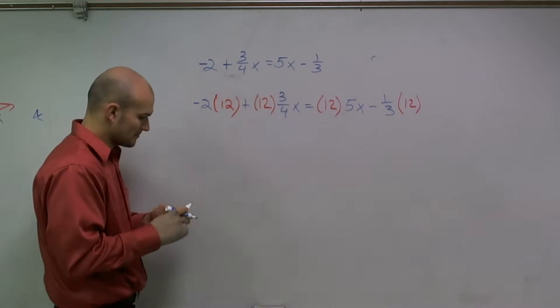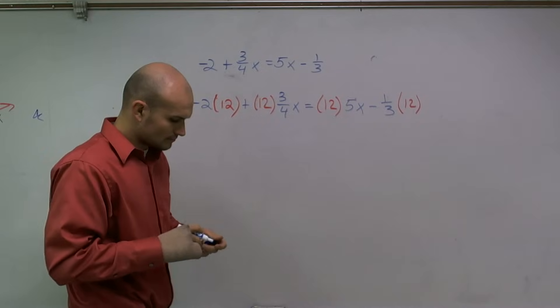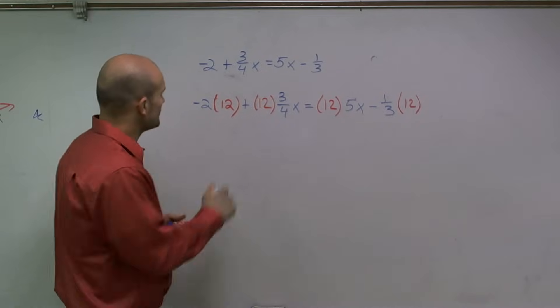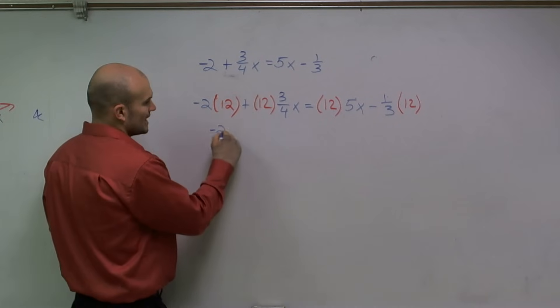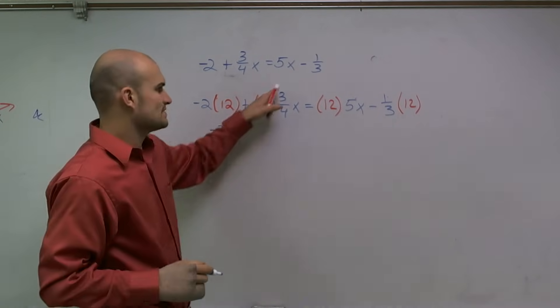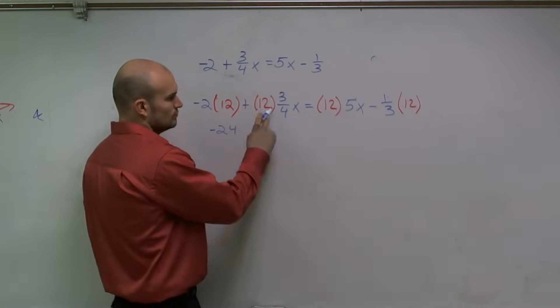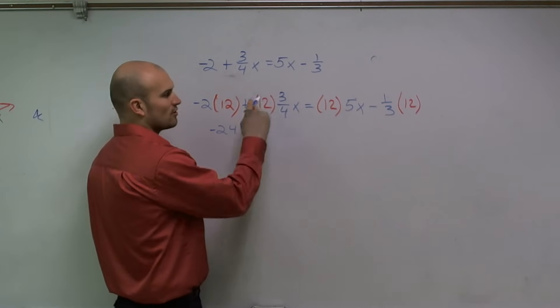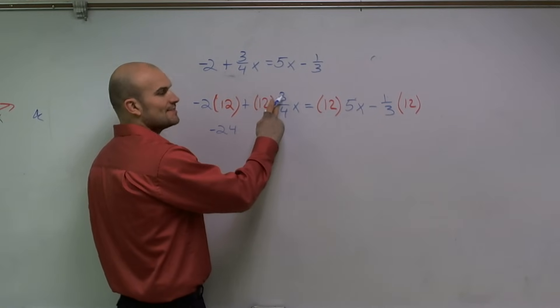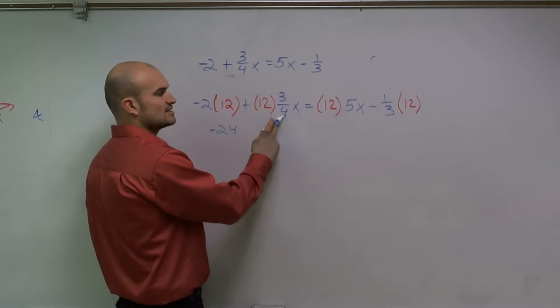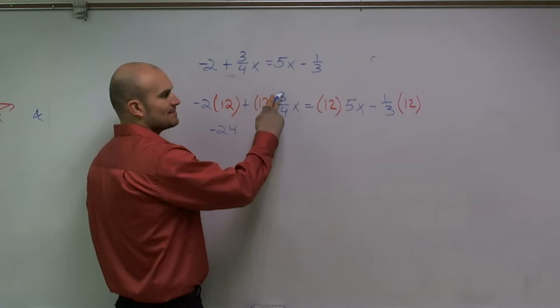Let's go through this. Negative 2 times 12 is negative 24. 12 times 3 fourths—there's a couple ways to do this. You can divide first then multiply, or multiply then divide. 12 times 3 is 36, 36 divided by 4 is 9. Or 12 divided by 4 is 3, 3 times 3 is 9.